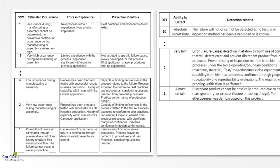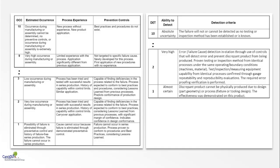For occurrence, it is very similar to the DFMEA — we have two extra columns. Instead of product experience and preventive controls, here we have process experience and preventive controls. The process experience talks about aspects related to the process itself: have we been able to identify the occurrence of the cause in the process?